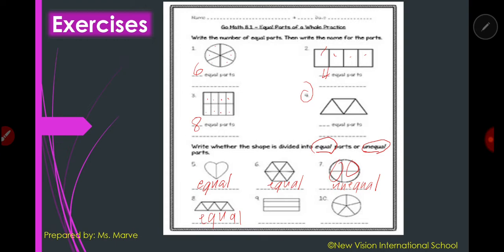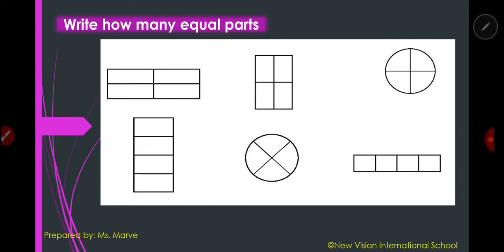Let's check your answers. Number nine — it is unequal. Number ten — it is equal. Good job! You can clap your hands with your mom if your answers are correct. Here is the same activity — take a picture with it, write down your answer, and send it to our group and I'll check it. This is your activity to answer alone — take a picture and send it to our group.